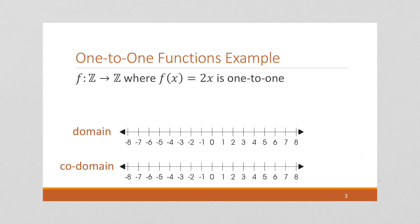Okay, let's take a look at a one-to-one function. So here we have the function f, and it starts with integers and goes to integers. So that's our domain and range. And the function definition is f of x equals 2x. And I'm going to claim it's one-to-one.